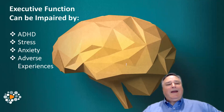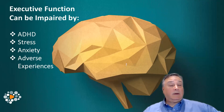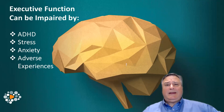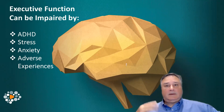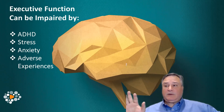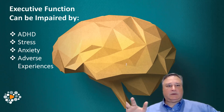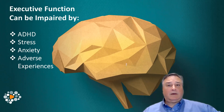When we have ADHD, executive function can be impaired. Stress can also impair performance — even neurotypical people who are stressed can't think straight or make good decisions, because stress affects cognitive skill areas and makes executive function very difficult.